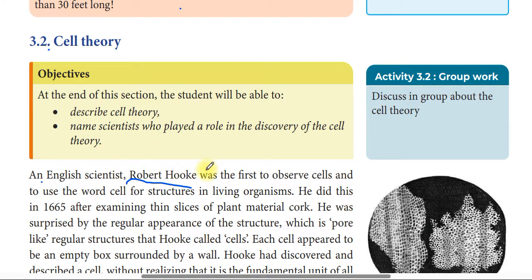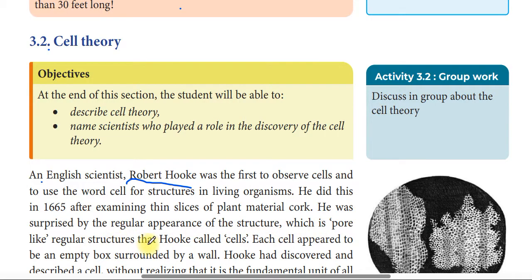Robert Hooke did this in 1665 after examining a thin slice of plant material. He was surprised by the regular appearance of the structure, which was a pore-like regular structure. That structure is called a cell.